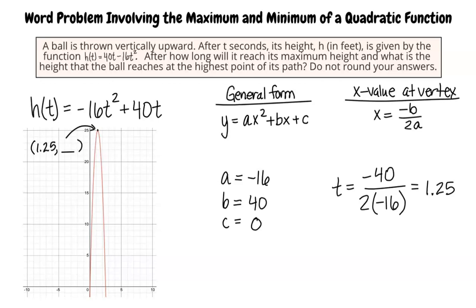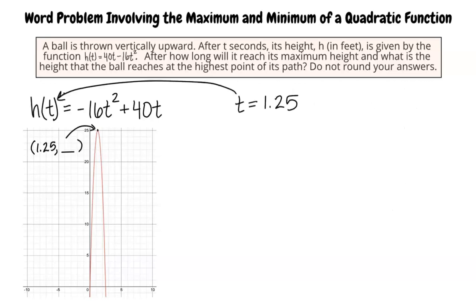Now, let's find the maximum height that the ball reaches. We will use the time, 1.25 seconds, that it takes for the ball to reach its maximum height to find the maximum height. Let's see how to do this. We must substitute the t value, 1.25, into the original equation and solve for h. Can you walk me through these steps?